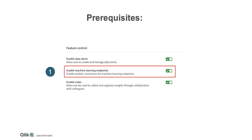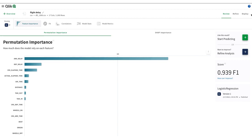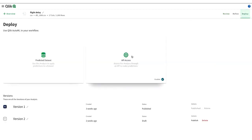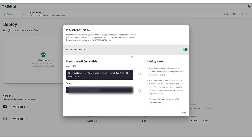Before we get started, make sure you understand the prerequisites. First, your tenant admin needs to turn on the enable ML endpoint option in the management console. And second, you need to have access to the classification model developed in Qlik AutoML using the prediction API.